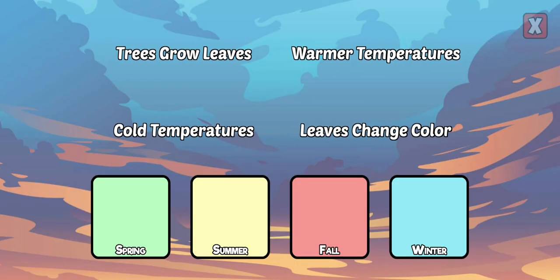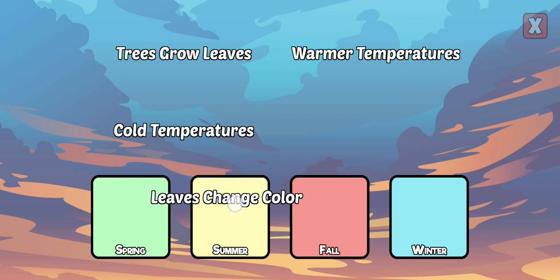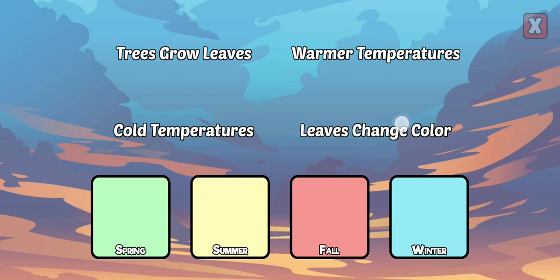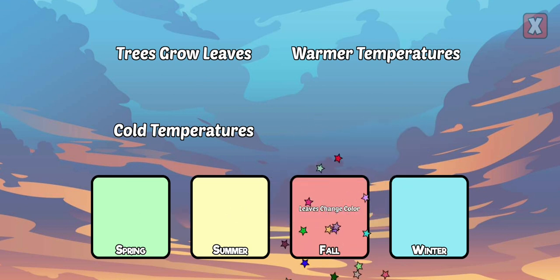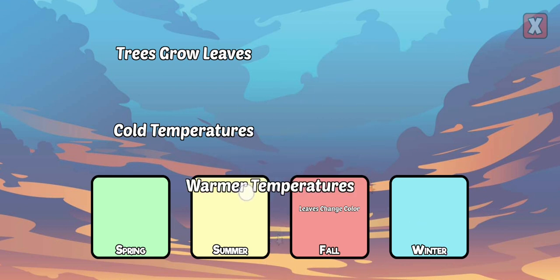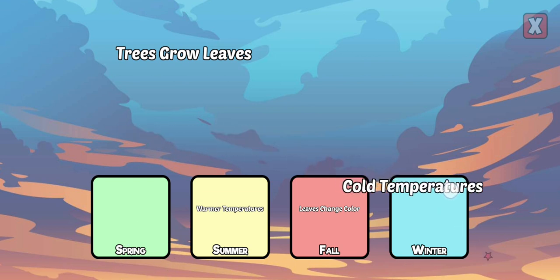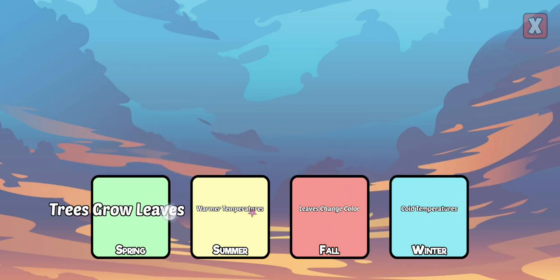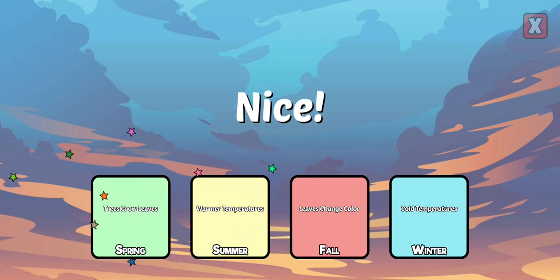Drag each description to the correct season. Leaves change color. Warmer temperatures. Cold temperatures. Trees grow leaves. Nice!